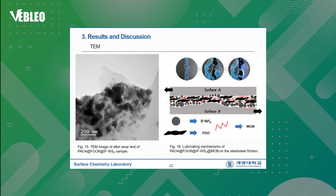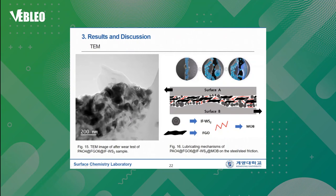Figure 15 shows the TEM image of lubricant samples after finishing the friction test. In this figure, you can see the TEM image displays IFWS2 inside and the FCO sheet wrapped around IFWS2. This result indicates that IFWS2 acts as a ball bearing between FCO sheets. Figure 16 shows the lubrication mechanism of FCO, IFWS2, and MOB. This figure suggests that the wear track in the contact surface was filled with IFWS2, which was introduced between FCO sheets, thereby serving as a ball bearing resulting in lubrication. In addition, gelator MOB fixed the additives of FCO and IFWS2 to prevent agglomeration and sedimentation and maintain dispersion of these additives.